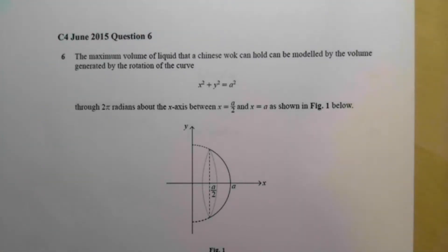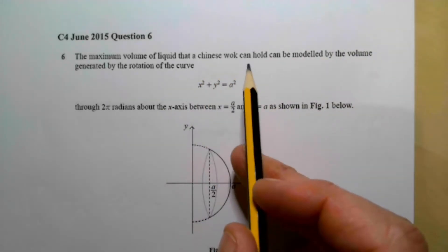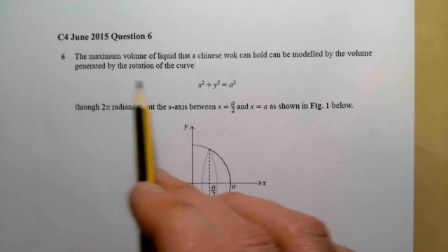This is CCEA A2 Pure Maths. We're looking at some past paper questions, and this is one from C4, June 2015, question 6. The maximum volume of liquid that a Chinese wok can hold can be modeled by the volume generated by the rotation of the curve.